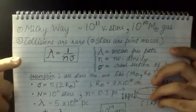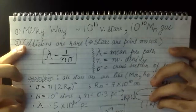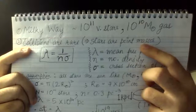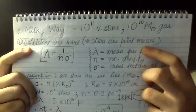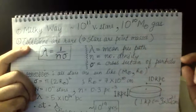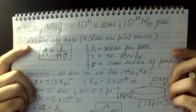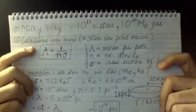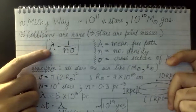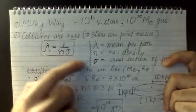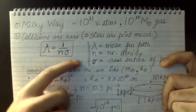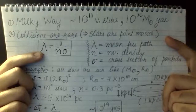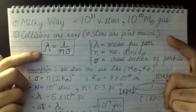Though there are 10 to the power 11 stars or more, collisions between stars are so rare that we neglect them. To show why, we use the mean free path formula: lambda equals one over n-sigma, where n is the number density of particles in the system and sigma is the cross-section of the particles. Mean free path is the average path between any two particles in a given system.